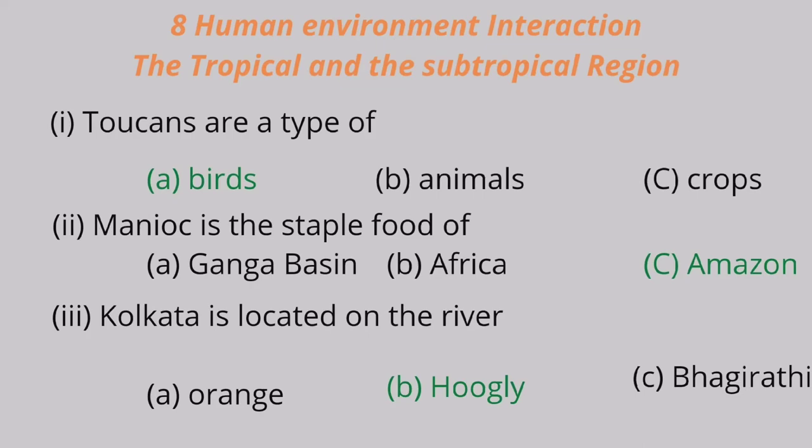Question 2: Manioc is the staple food of A. Ganga basin, B. Africa, C. Amazon. Amazon is the correct answer. Question 3: Kolkata is located on the river A. Orange, B. Hugli, C. Bhagirathi. The correct answer is Hugli.